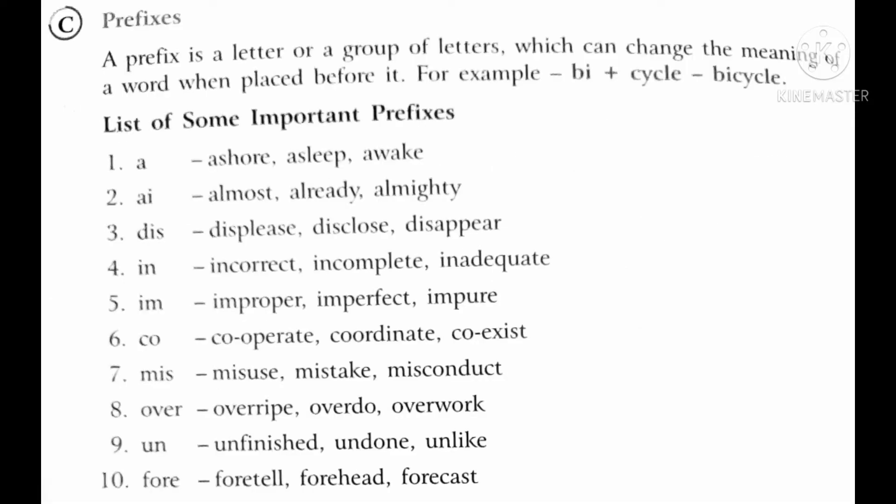Now the next one is prefix. So what do you mean by a prefix? A prefix is a letter or a group of letters which can change the meaning of a word when placed before it. That means a group of letters placed before the root of the word. For example, you can see in the book — first it is written 'cycle', and after that we have placed 'bi' before the word, then it changed into 'bicycle'.